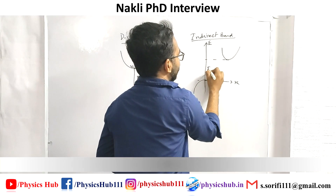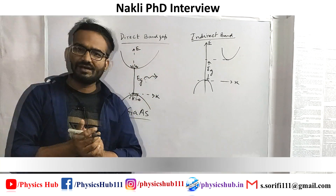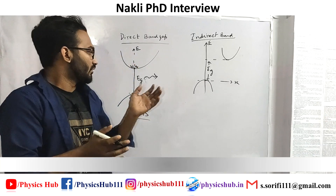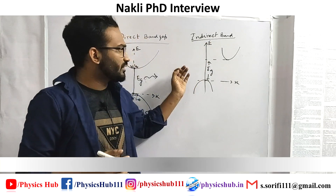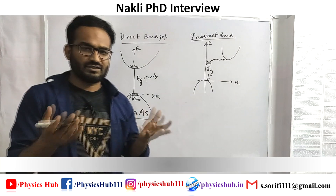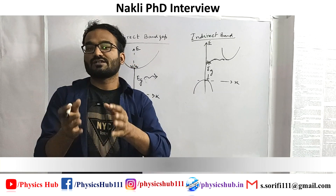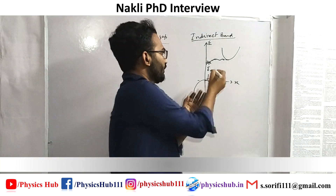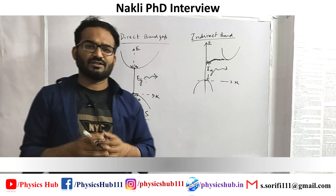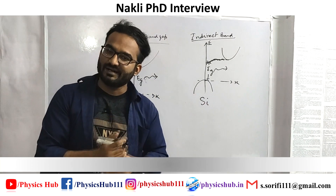The difference between the conduction band minima and valence band maxima still gives us the energy band gap. For a direct band gap material, when an electron transition occurs from the conduction band minima to the valence band maxima, conservation of momentum is automatically satisfied. But for an indirect band gap semiconductor, to conserve crystal momentum, the transition must include an interaction with the crystal lattice — this comes in the form of heat. Then an electronic transition can occur and a photon with energy equal to the band gap may be emitted. Silicon is such an indirect band gap semiconductor.